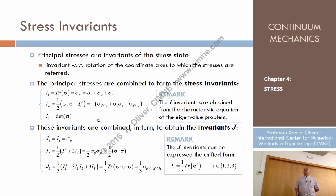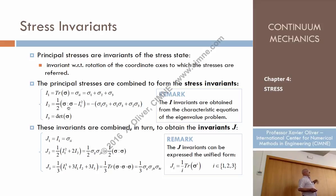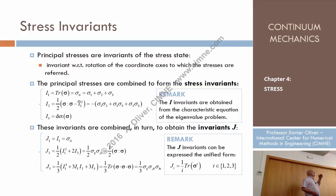What is I2? It can be proven that I2 is one half of the double dot product of the tensor with itself — that is, the sum of every component squared — minus I1 squared, which is (σ11 + σ22 + σ33) squared. This result doesn't change if you change the system of coordinates, so it is an invariant.